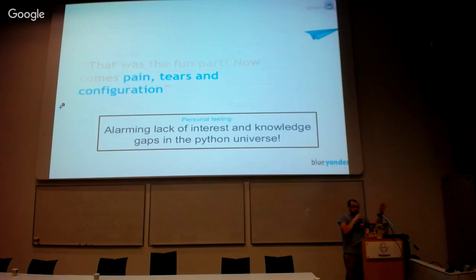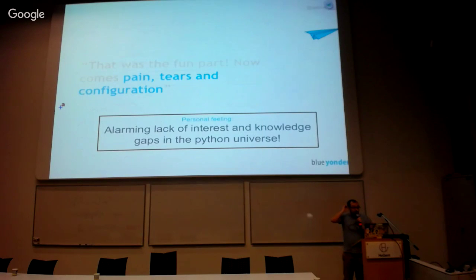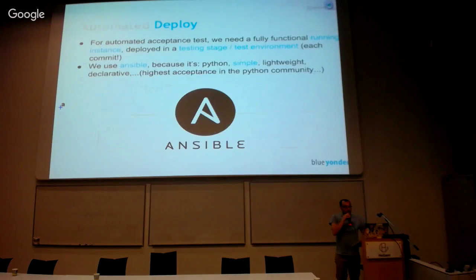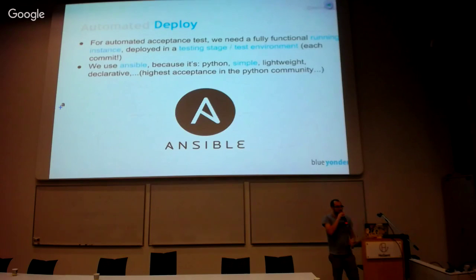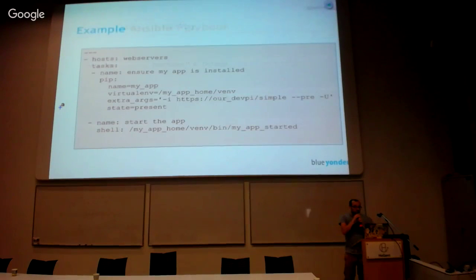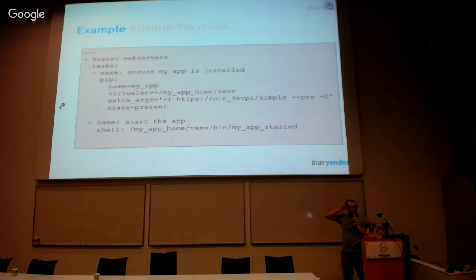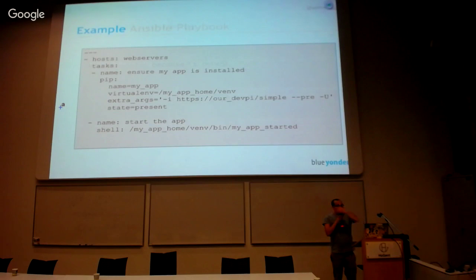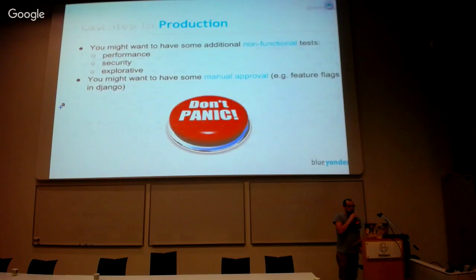So that was the fun part — doing all the continuous integration stuff, that's where the developers live. Now comes infrastructure tiers and configuration, and really that's my personal feeling: there's an alarming lack of interest and knowledge gaps in the Python universe. All the tutorials just set up a debug web server and that's enough. For real acceptance testing we need a running system, which needs to be built automatically. We use Ansible for this. The only interesting thing here is that we use virtualenvs for isolation of dependencies, so we can have multiple environments — Docker will do the same, but we use the native stuff.